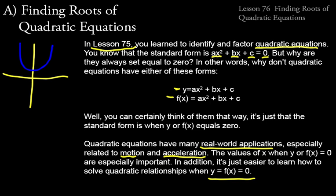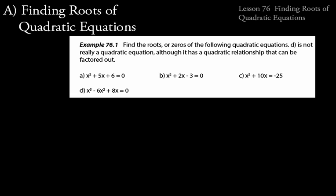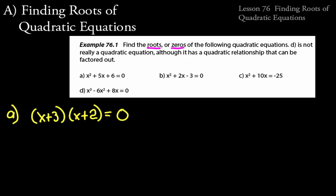All we're going to do in this lesson is apply the rules and definitions from Lesson 75 to find the roots of quadratic equations from example 75.2. Let's look at example 76.1: find the roots or zeros — remember, those two words mean the same thing — for the following quadratic equations. Note that D is not strictly a quadratic equation, although it has a quadratic relationship that can be factored out. Let's start with A. We'll factor it and then use the zero factor theorem to find the roots, giving us x plus 3 times x plus 2 equals zero on the left. We could also write it as x plus 2 times x plus 3 — the order of the binomials doesn't matter.